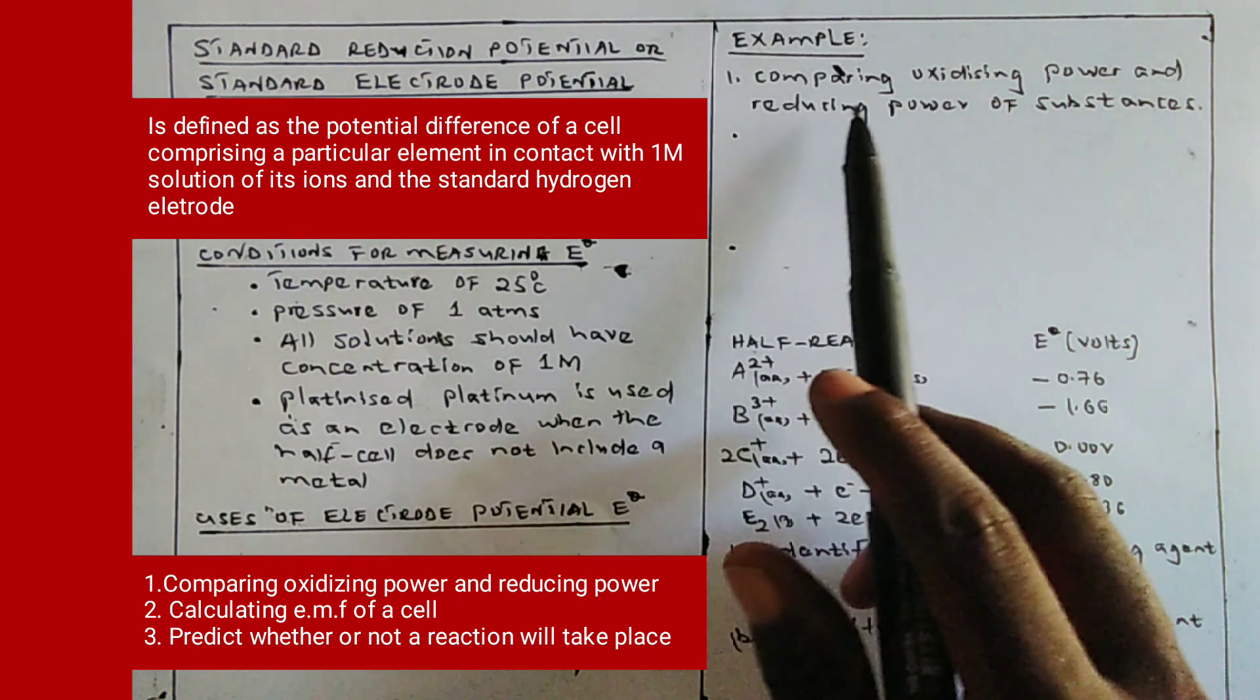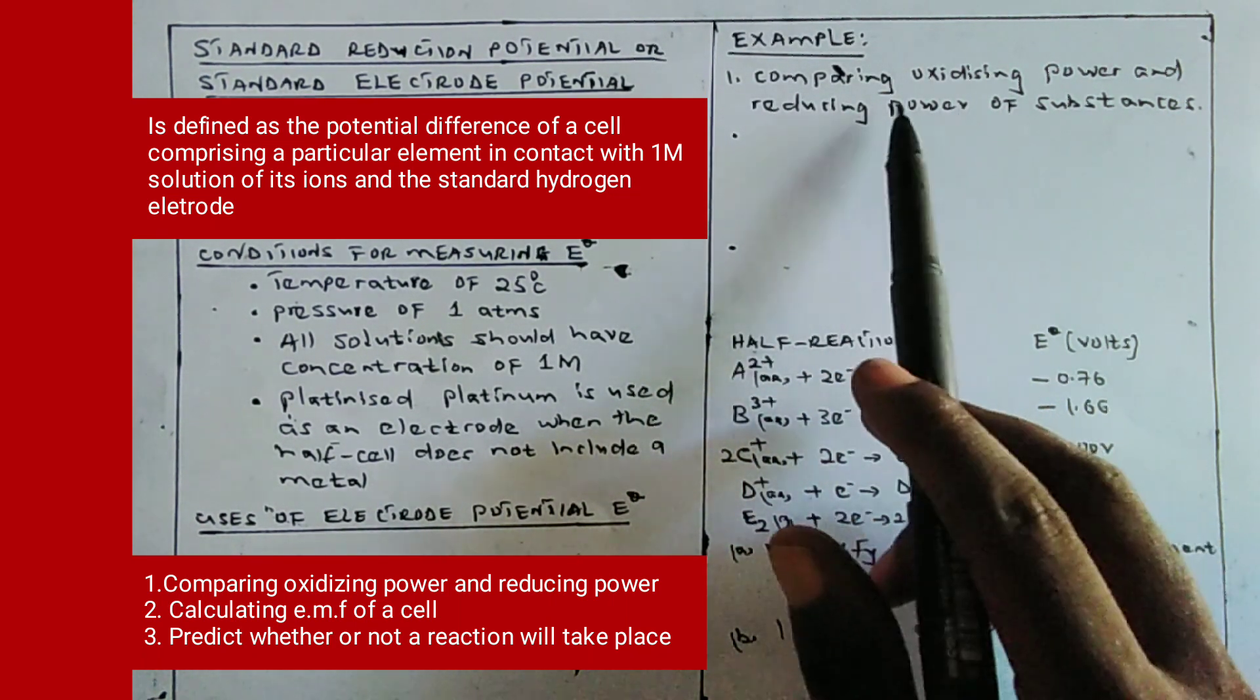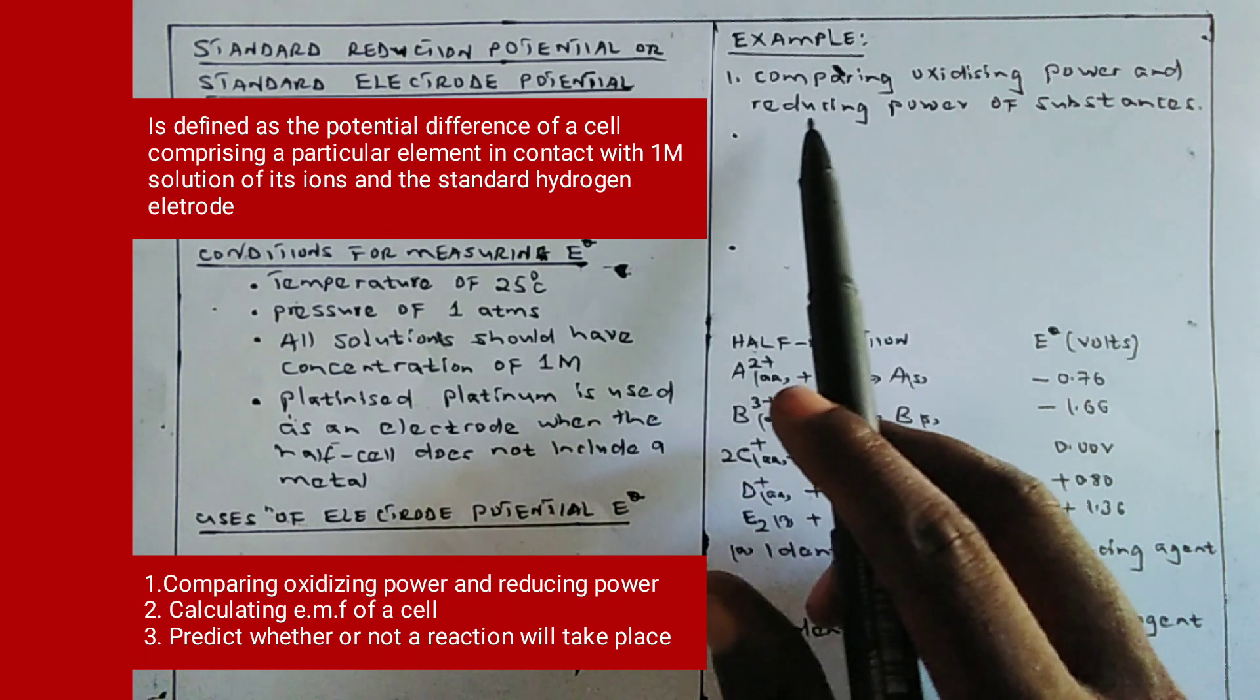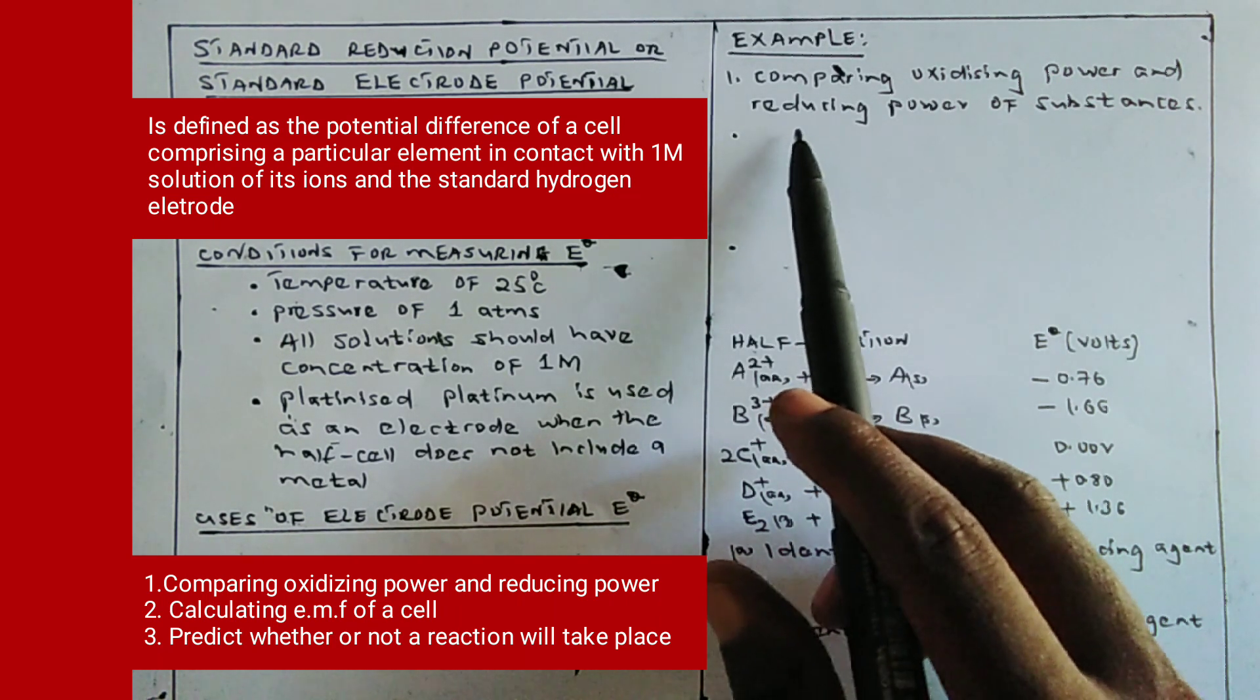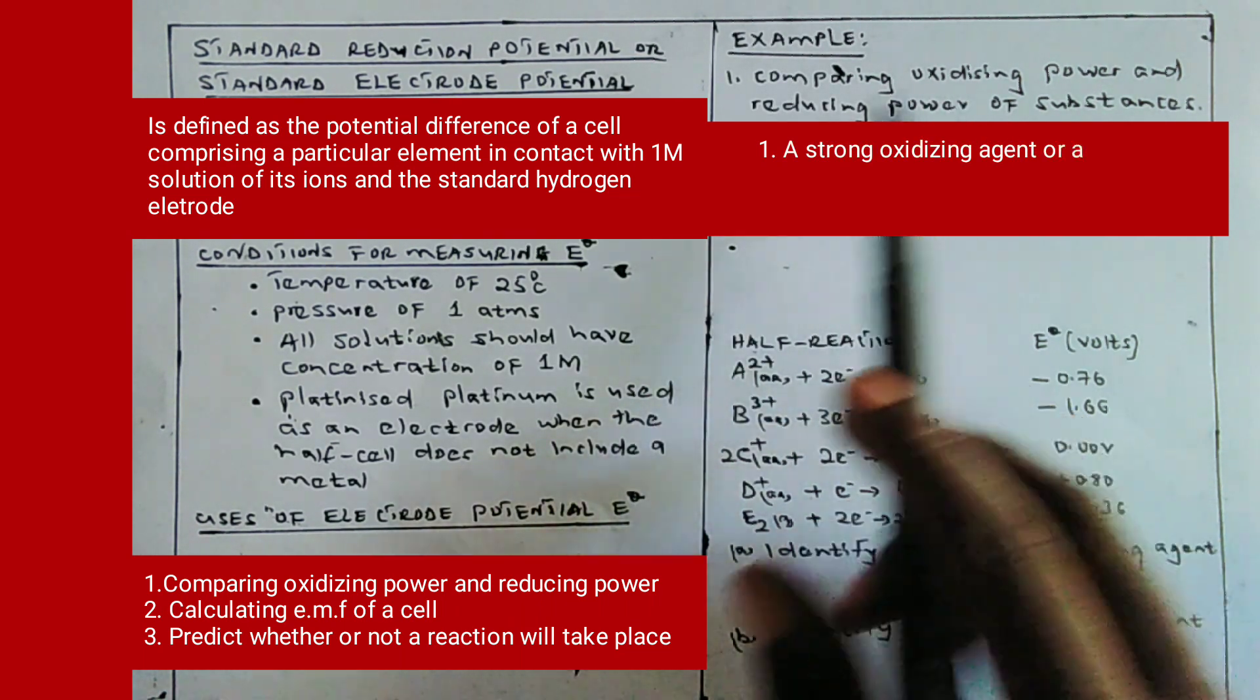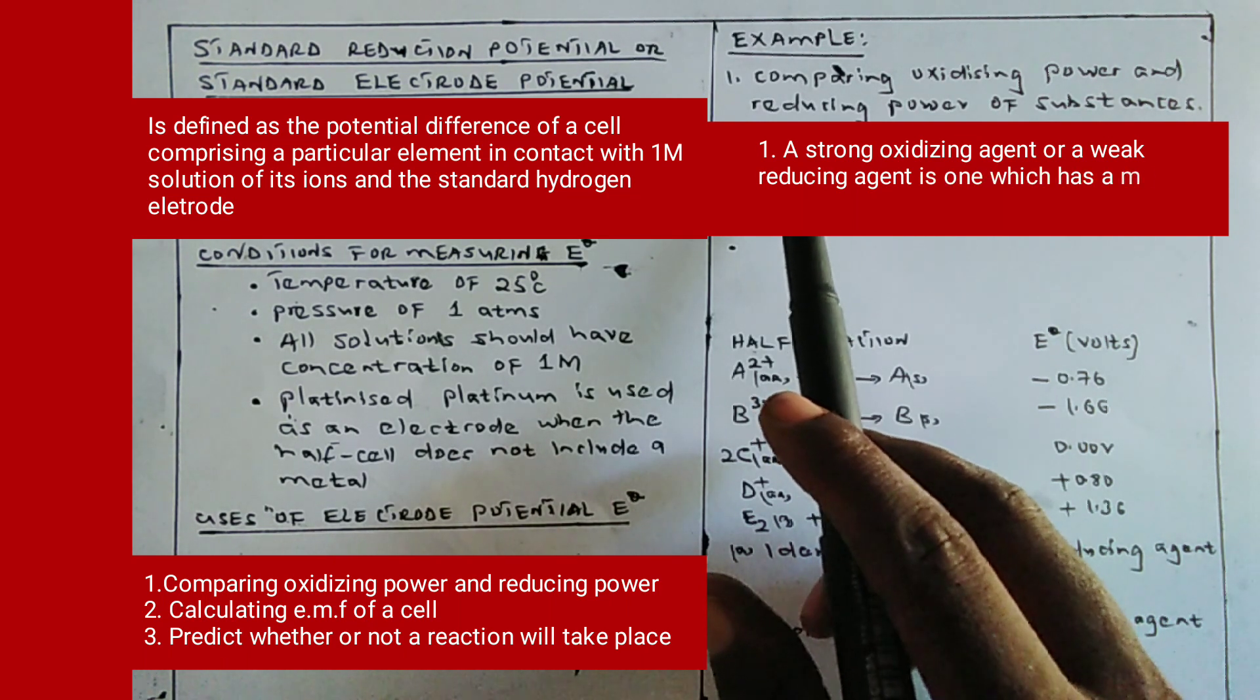In today's lesson, we look at how to compare the oxidizing power and reducing power of substances using E0. A substance is a strong oxidizing agent or weak reducing agent if it has a more positive electrode potential.